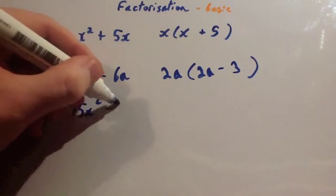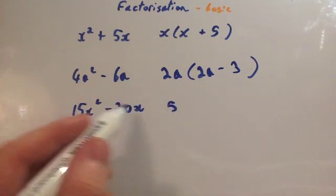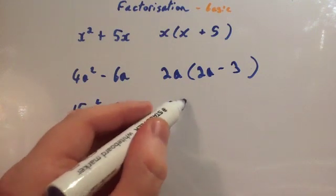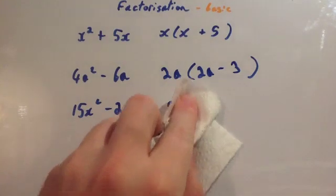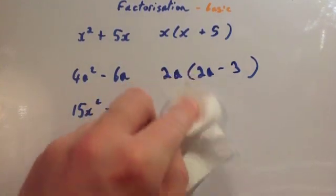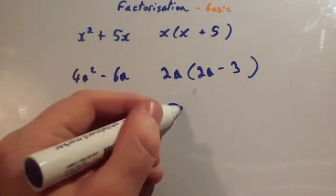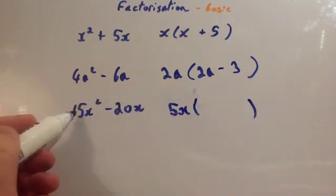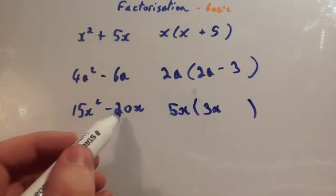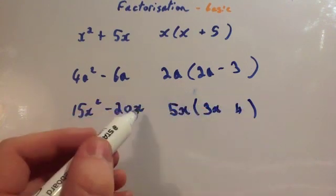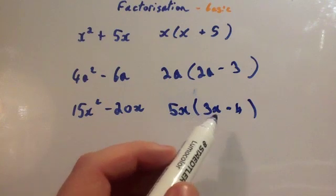Next: 15x² - 20x. You can divide both terms by 5, and also by x. So 5x goes outside the brackets. 15 ÷ 5 = 3 and x² ÷ x = x, giving 3x. Then 20 ÷ 5 = 4 and x ÷ x = 1, so just 4. With the minus sign, the answer is 5x(3x - 4).